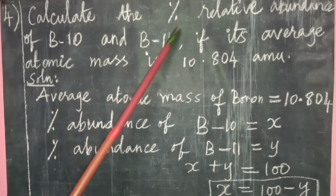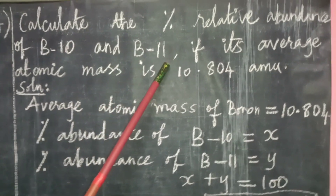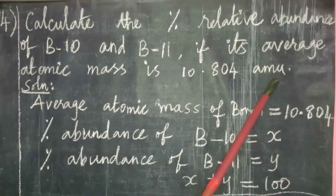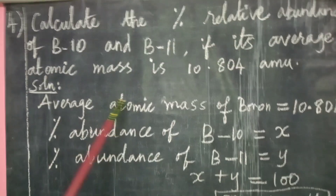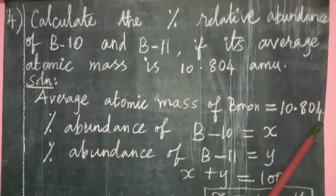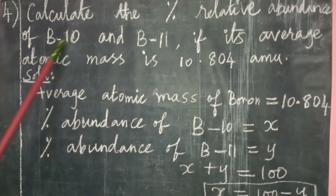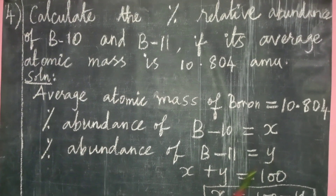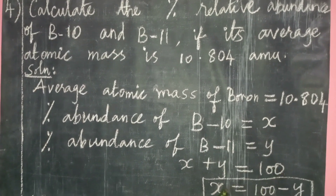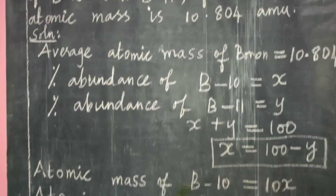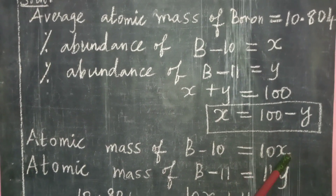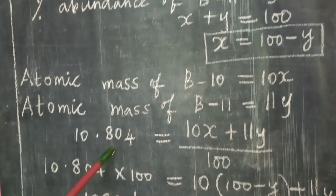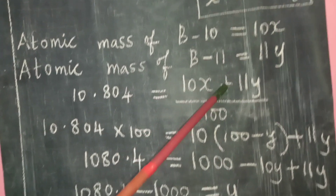Fourth question: calculate the percentage relative abundance of boron-10 and boron-11, if the average atomic mass is 10.804 AMU. Let the relative abundance of B-10 = X and B-11 = Y. So X + Y = 100, meaning X = 100 − Y. The average atomic mass formula: 10.804 = (10X + 11Y) ÷ 100.